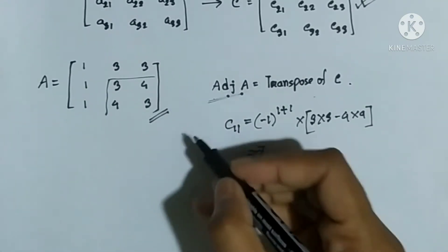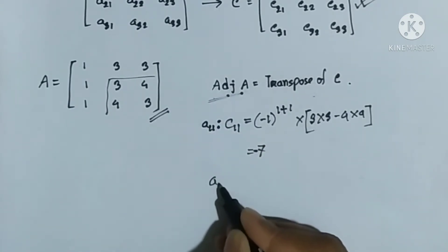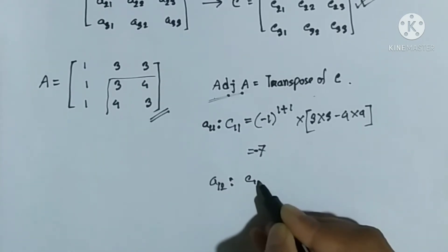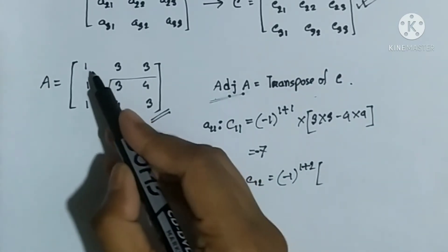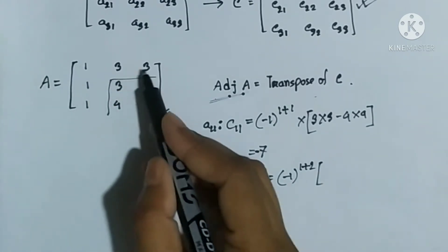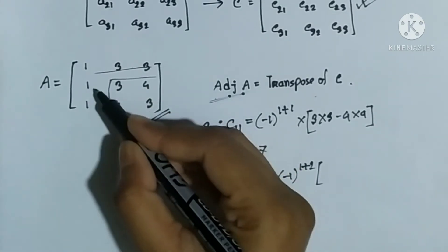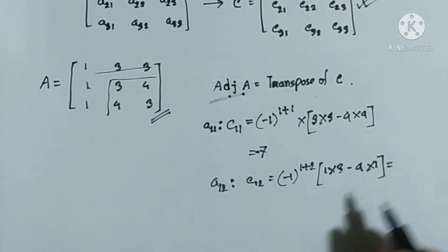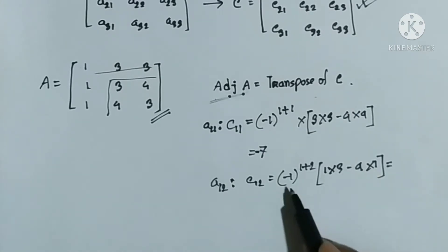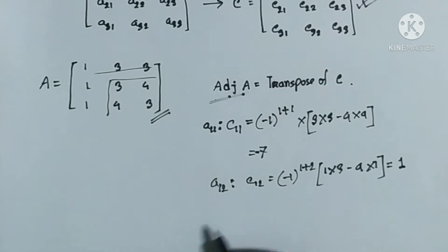For position (1,1), the co-factor is minus 7. For position (1,2), C(1,2) equals (-1)^(1+2) times the determinant — that is (1×3) minus (4×1) — which gives us 3 minus 4 = minus 1. Then (-1) into (minus 1) gives us plus 1. So the co-factor for position (1,2) is plus 1.